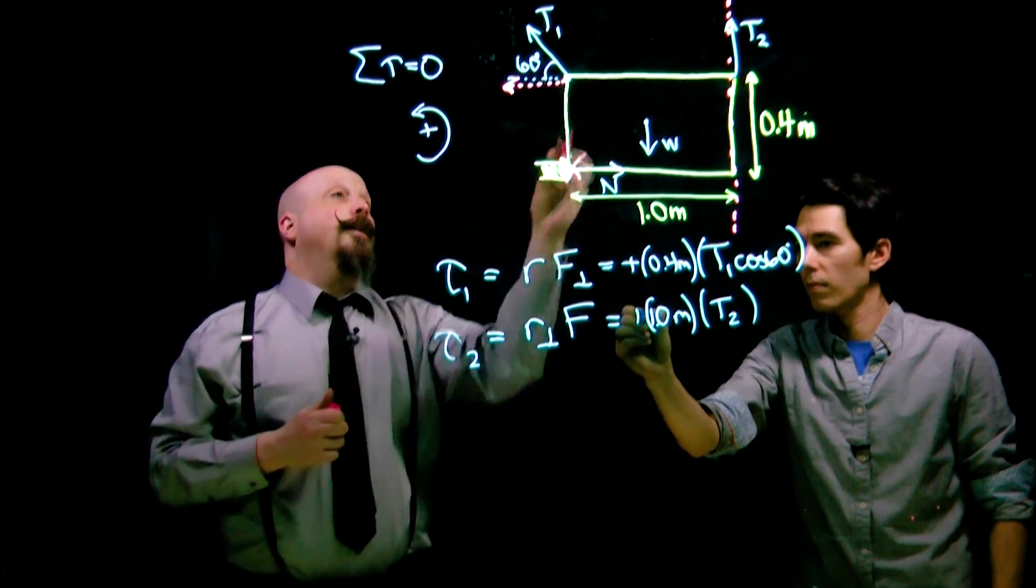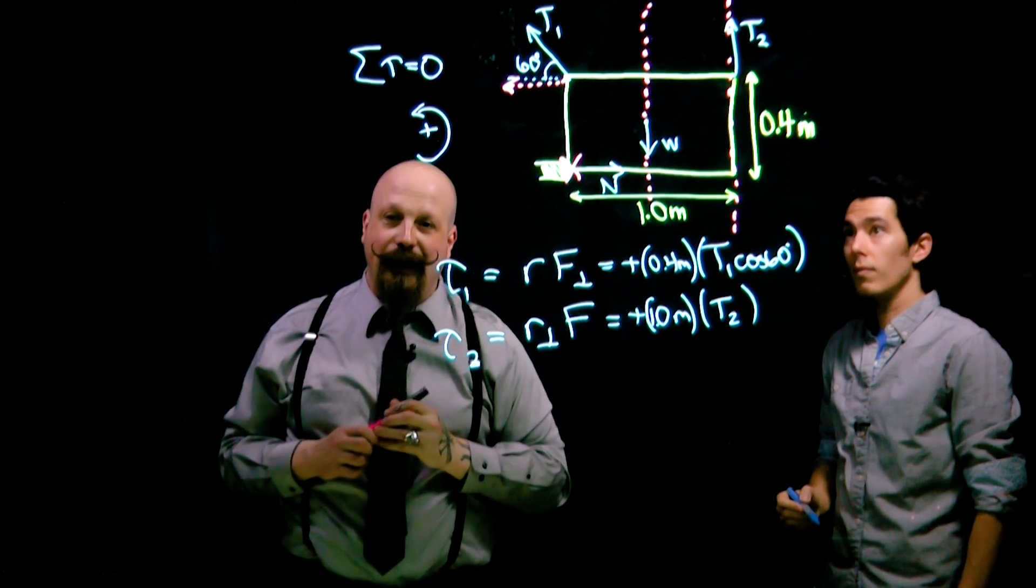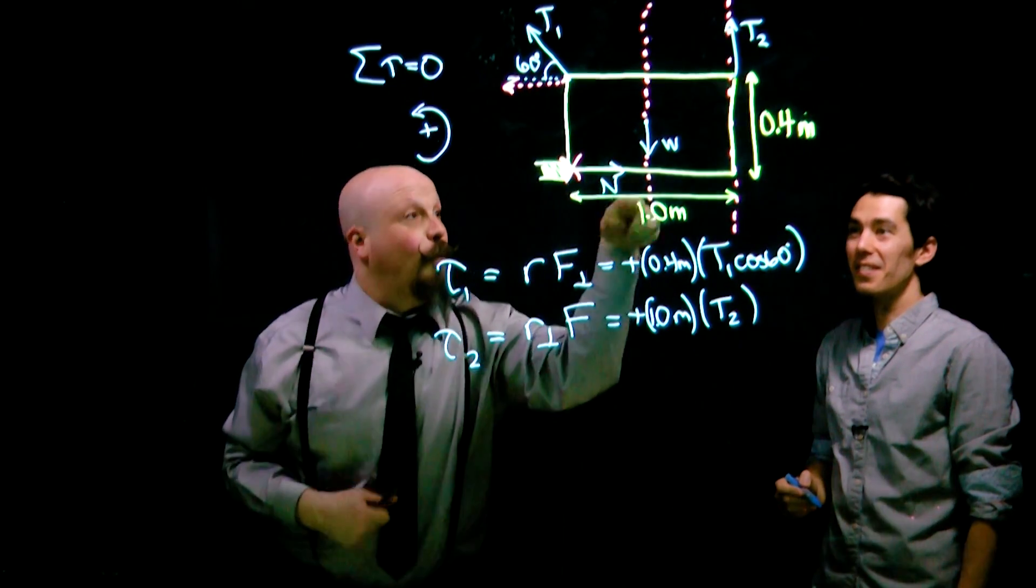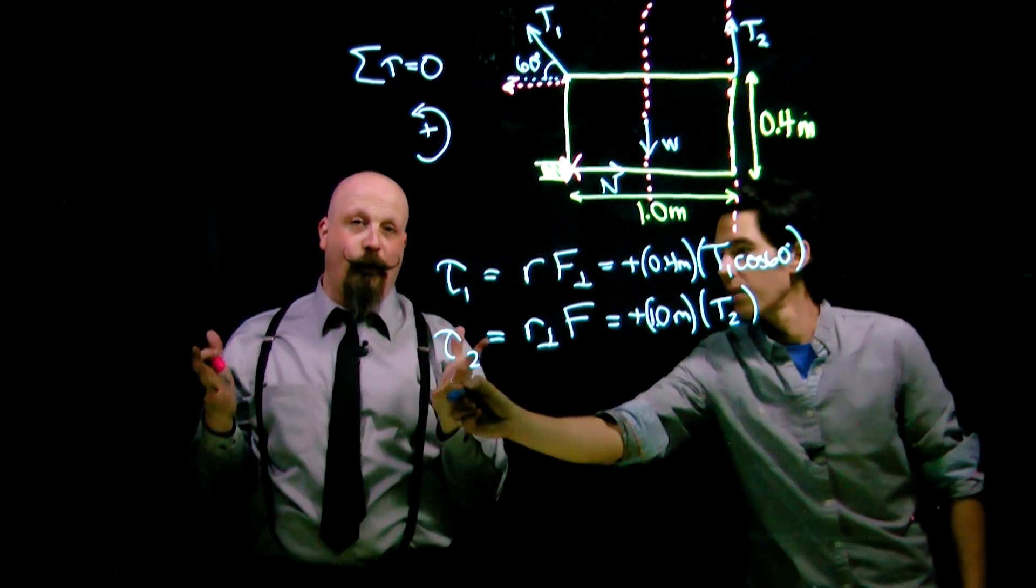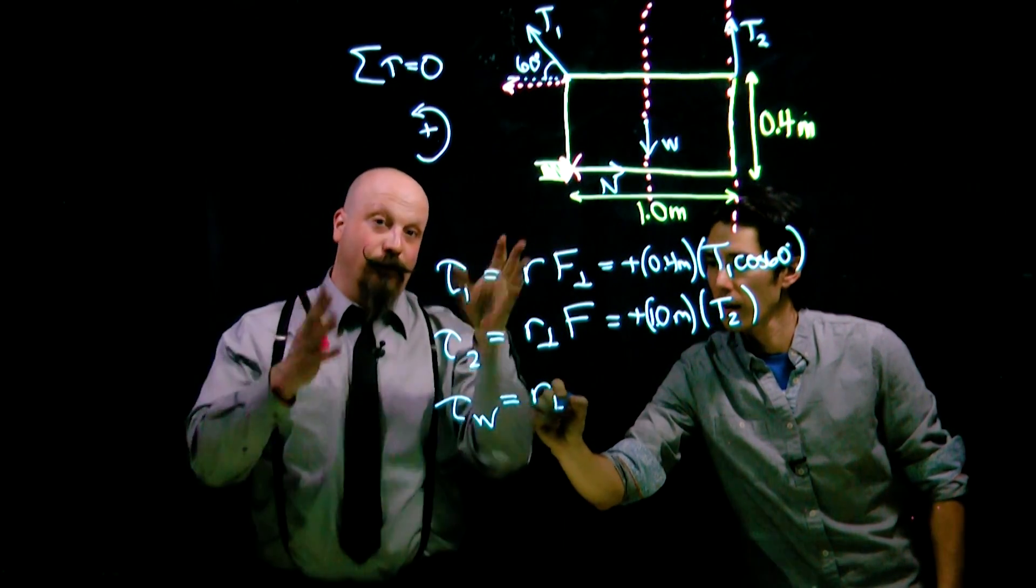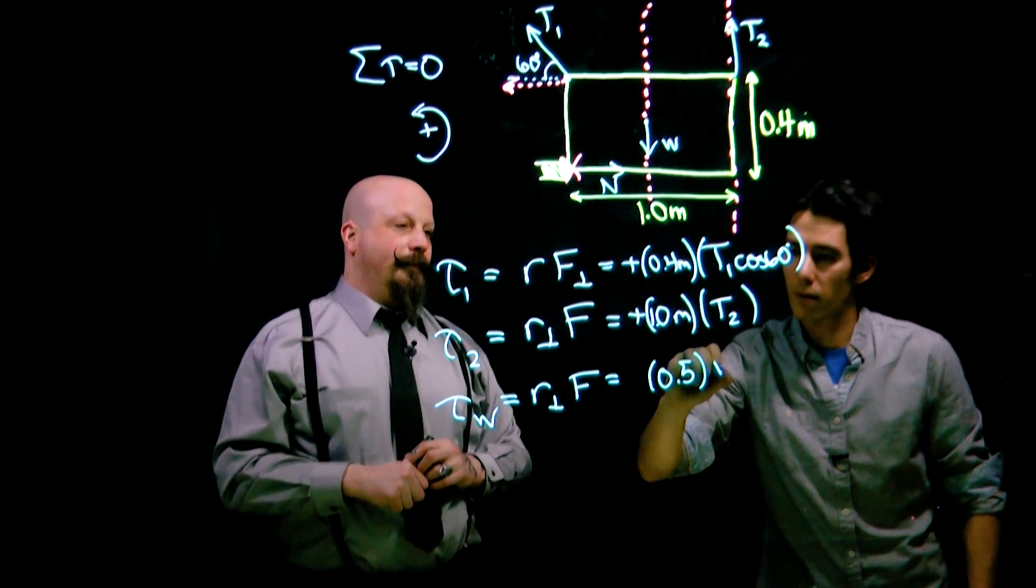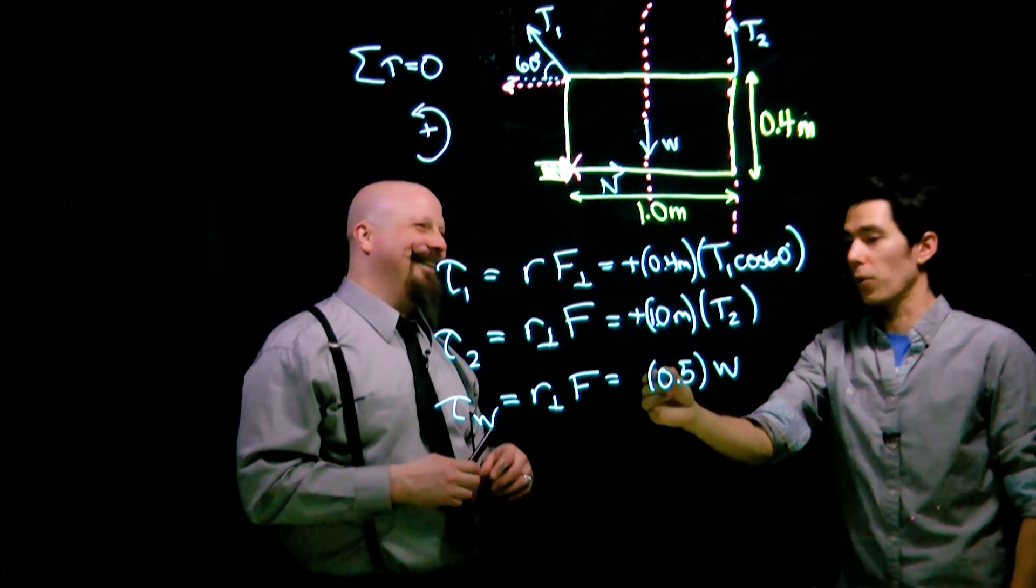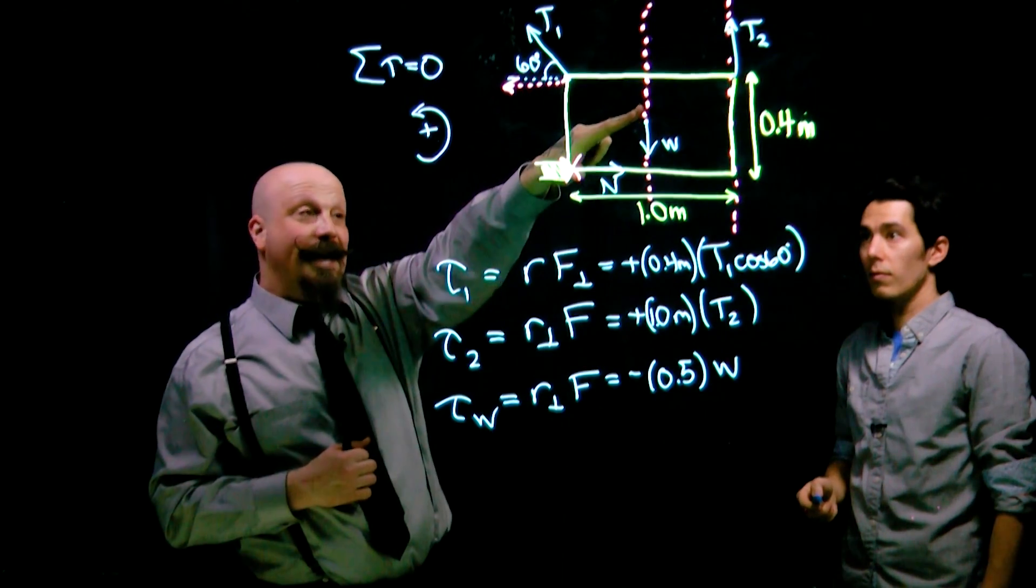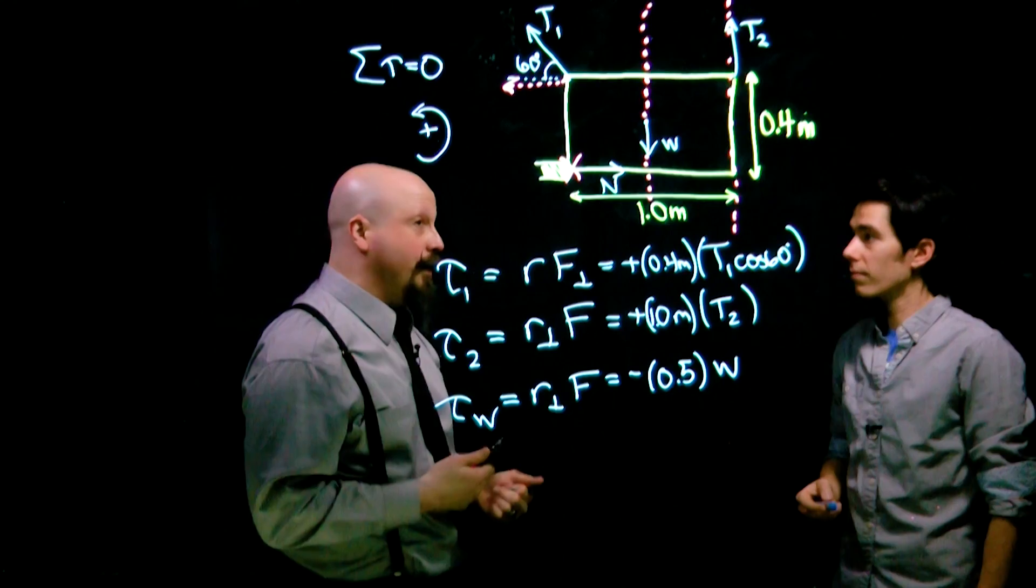We can do the same thing with the weight. We take our line of action, extend it, and take the distance from the pivot to where the weight acts, which is 0.5 meters, halfway across, and the full value of w. We don't really know what it is yet, it doesn't matter. This is a negative torque though. This weight causes rotation in this direction, opposite to positive, therefore causing a negative rotation.